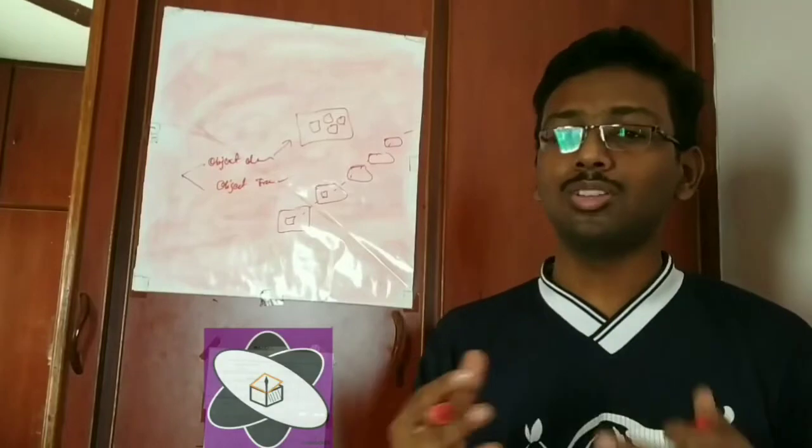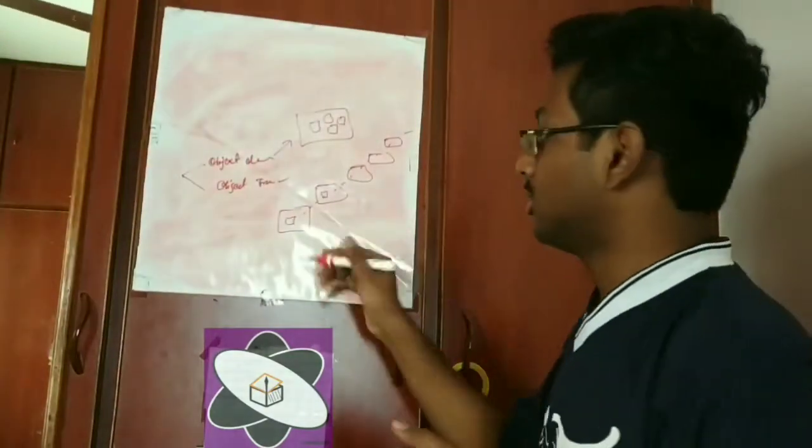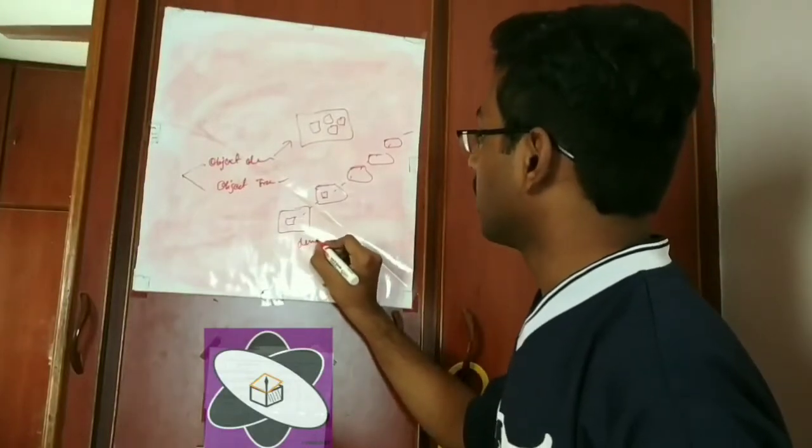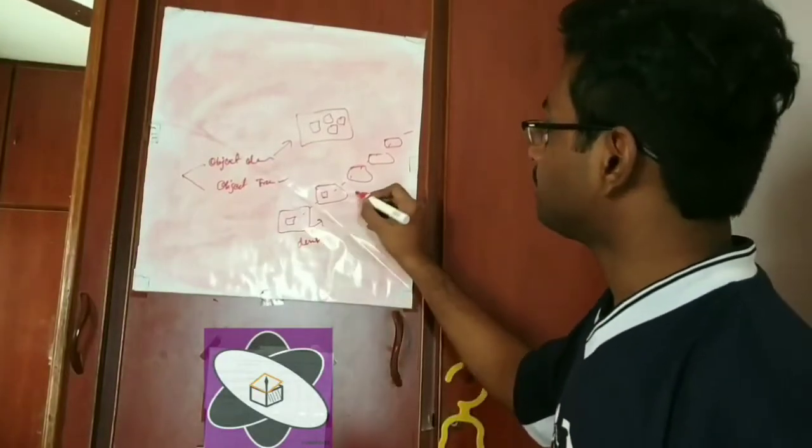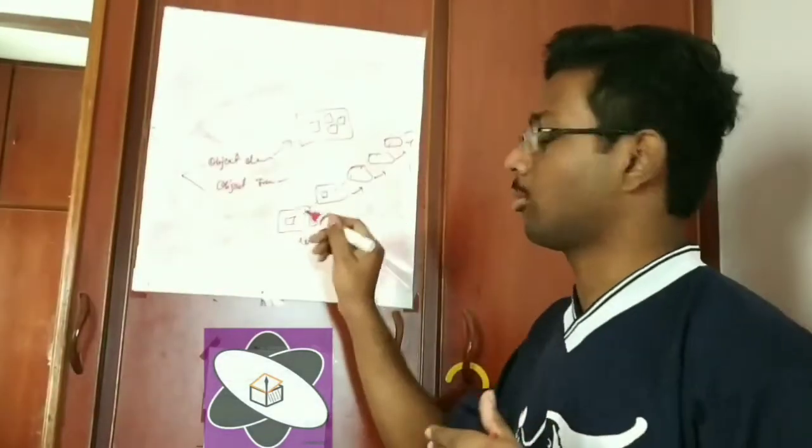But we are more or less doing some kind of trick or tweak for object tracking here in object detection. So this method is known as dense method because in every frame we are trying to get the image, where it is located, the coordinates, and we are going to draw the contour.